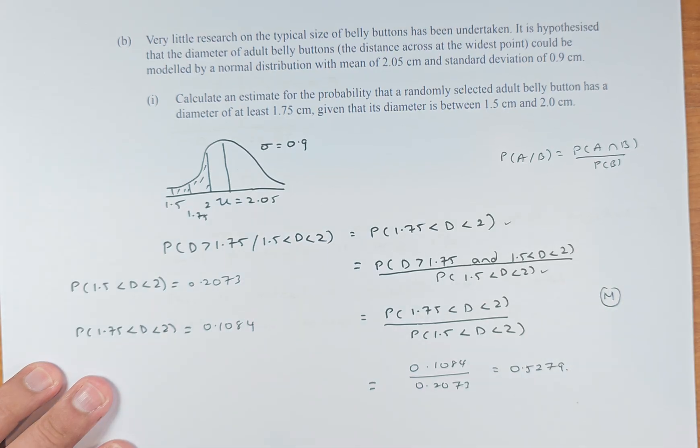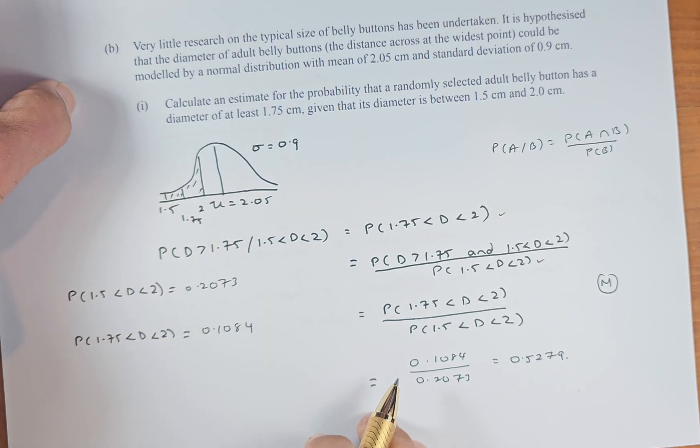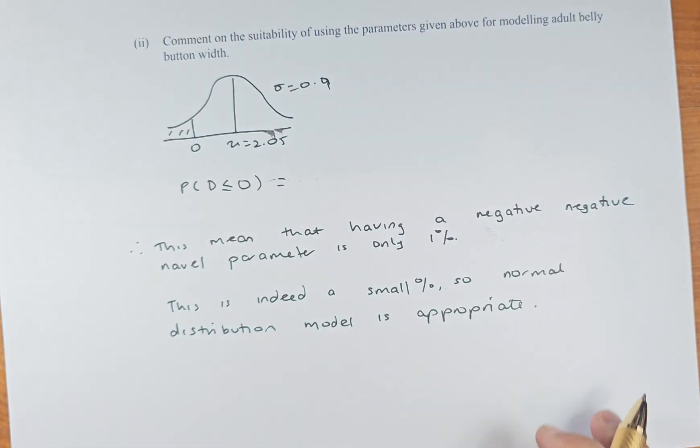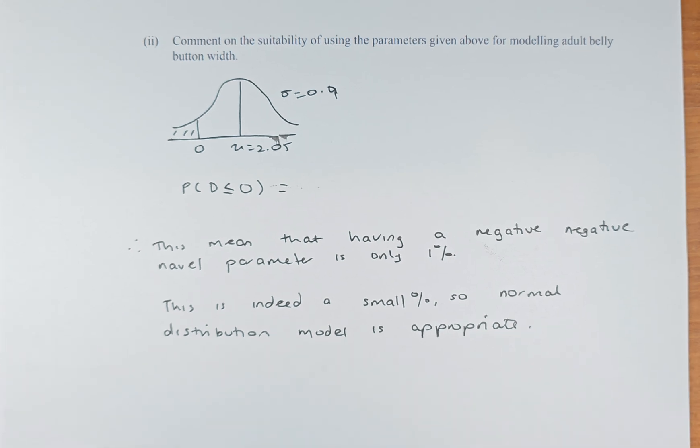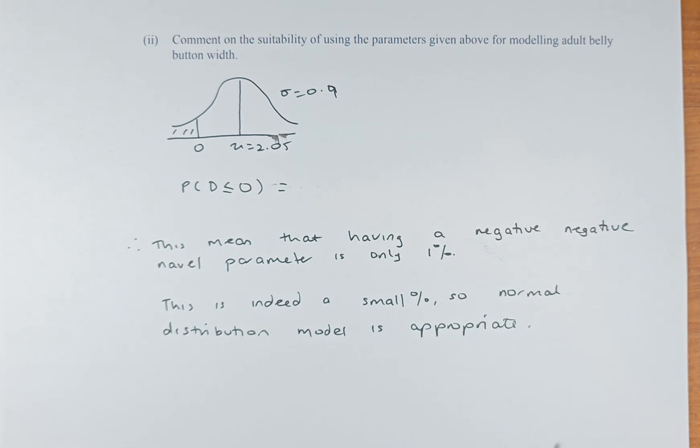And to get excellence, you must get the second part right. So the second part sounds like this. So we shall read the question and try to solve it. Comment on the suitability of using the parameters given above for modeling adult belly button width using the normal distribution.